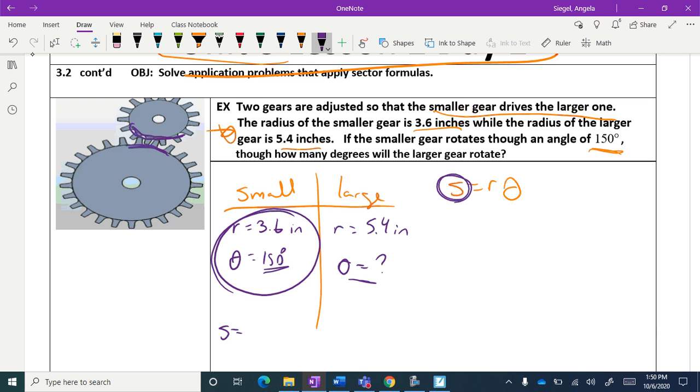Let's start here: s equals r theta. I can't use 150, so I'm going to change it to radians and it ends up being about 2.618.